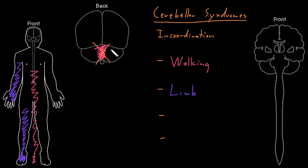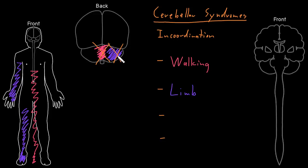Limb in-coordination is usually from dysfunction of the same side of the cerebellum as the limbs that are in-coordinated. So if we have dysfunction of the right side of the cerebellum, what we'd usually see is in-coordination of the right arm and the right leg — the limbs on the same side. This often confuses people, because most other brain problems give you a problem on one side of the brain affecting the other side of the body. But the cerebellum is set up a little differently — we'll save the wiring details for later videos.